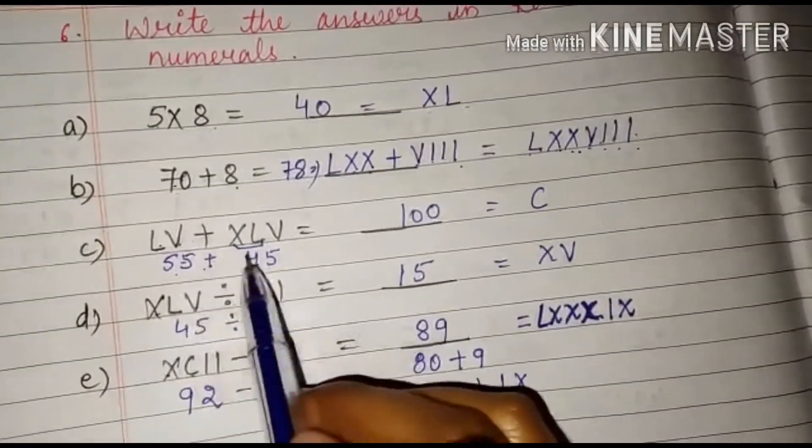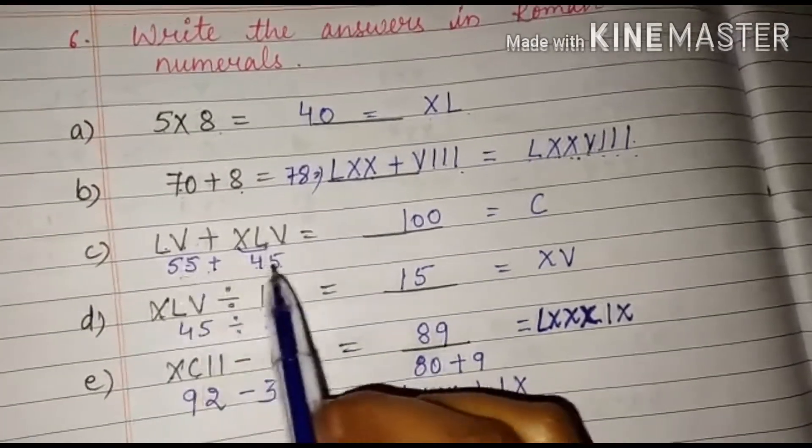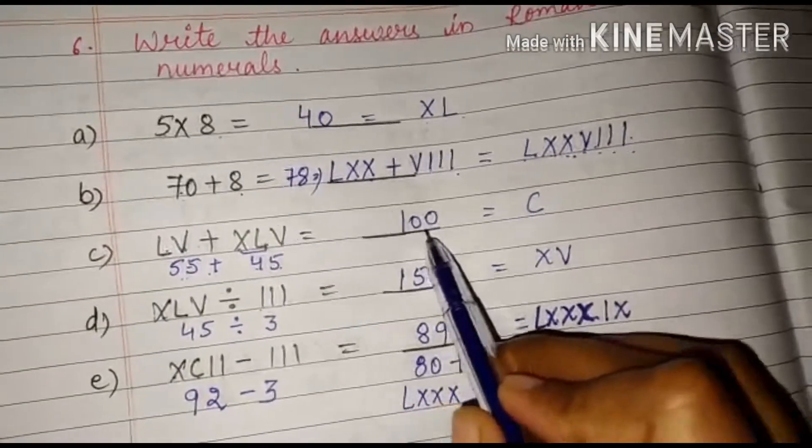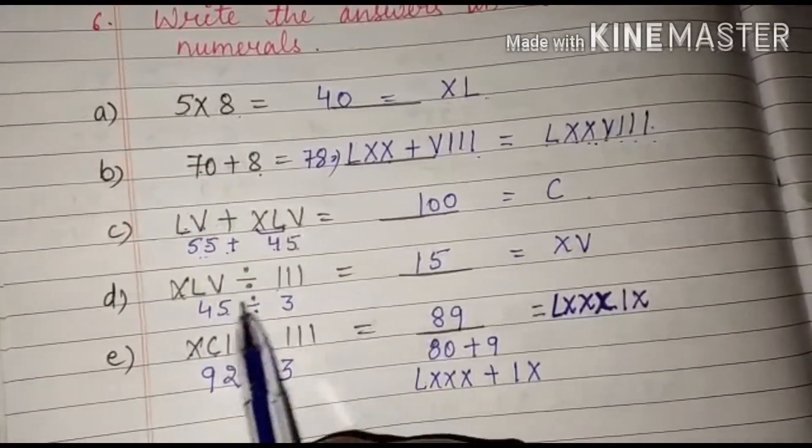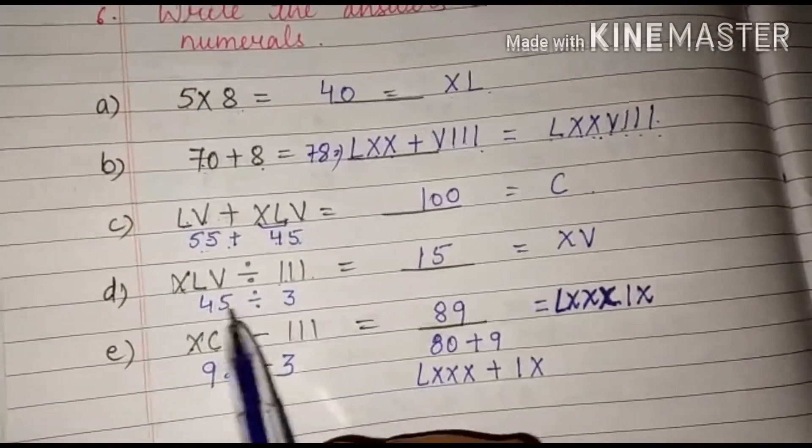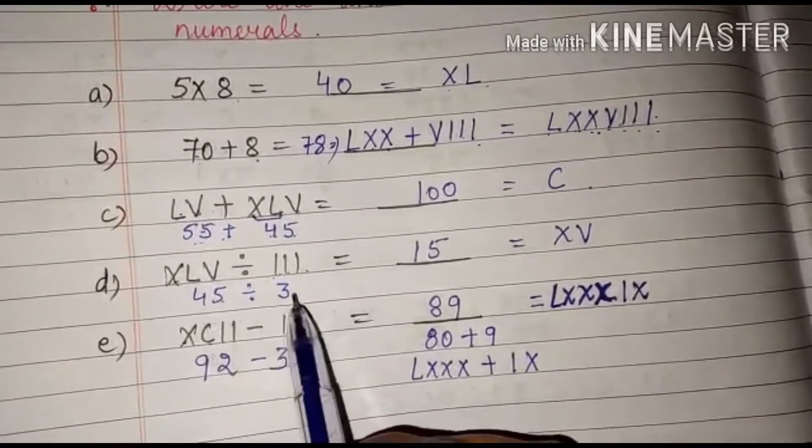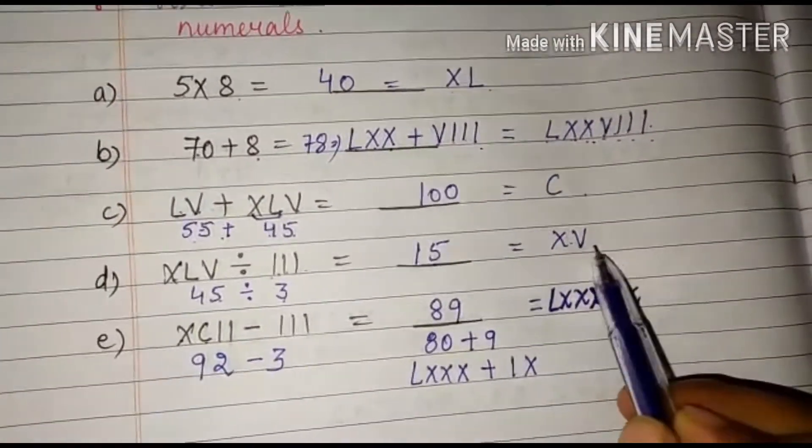LV is 55. XLV is 40, V is 5. It is 45. 55 plus 45 will be 100. And 100 can be written as C. XLV is 45 divided by 3 times I we have. So that means it is 3. So we have to divide 45 with 3. So we will get 15. So 15 can be written as XV.